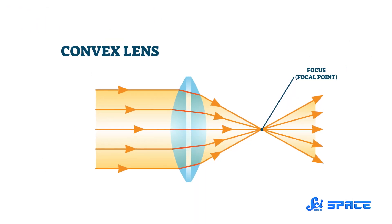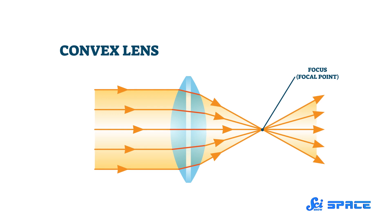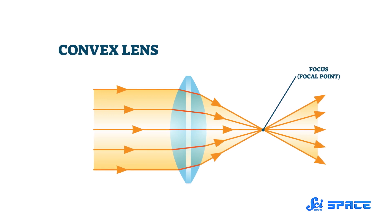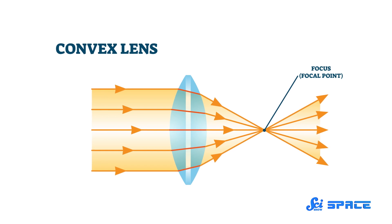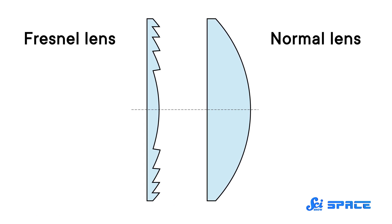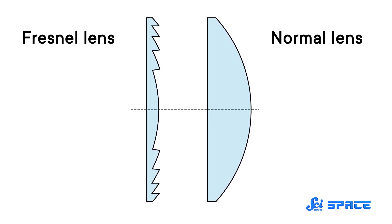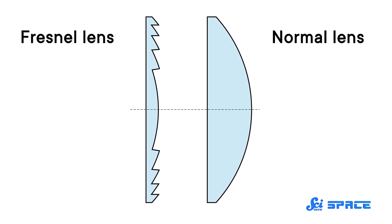A lens could theoretically bend and collect the lighthouse's light and make it visible from farther away. But a convex glass lens, big enough to do that job, would have been far too heavy to mount at the top of a tower. Fresnel figured out that you didn't need a big, thick lens to get the same bending of the light, just its outer curved profile. So he effectively hollowed it out and then flattened the once curved surface into a series of concentric circular prisms.